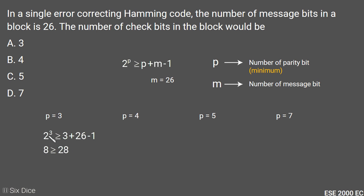For p equals 4, we calculate the same: 2 to the power 4 is 16, and 4 plus 26 minus 1 is 29. Since 16 is not greater than or equal to 29, p equals 4 is also not our answer.